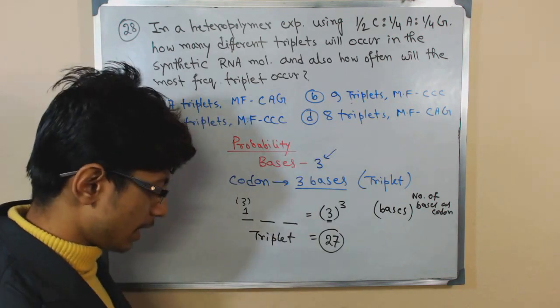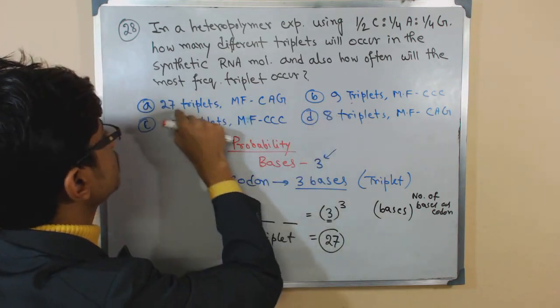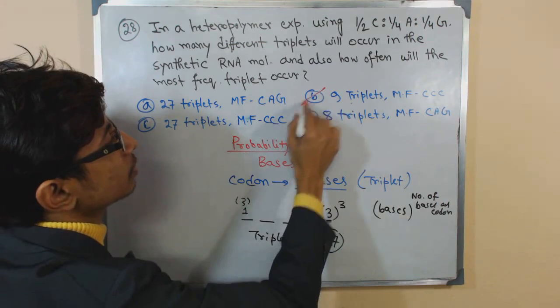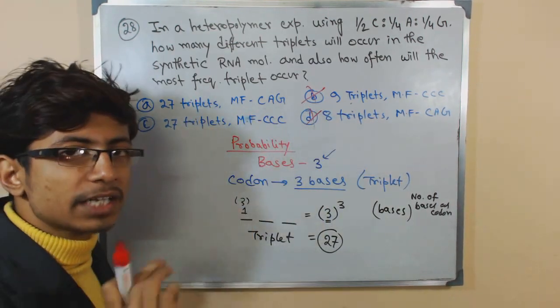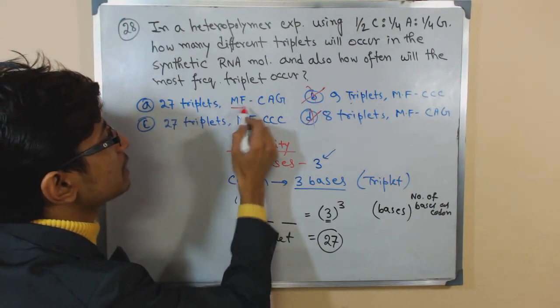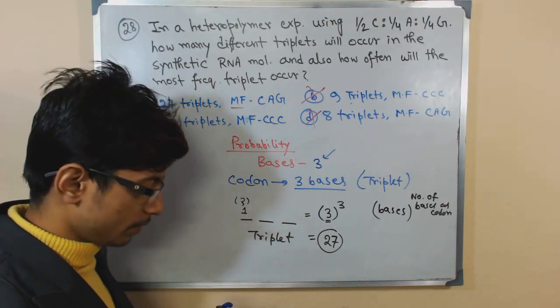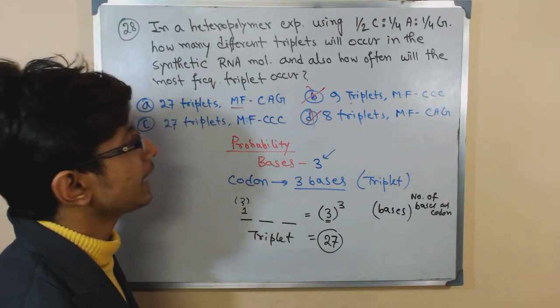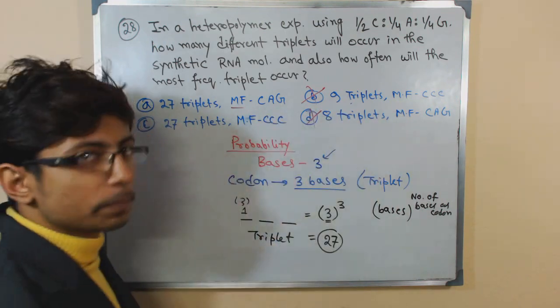Now we have a choice between two options: 27 triplets. In this case you can see only two different types of triplets are provided - one is CCC and one is CAG.